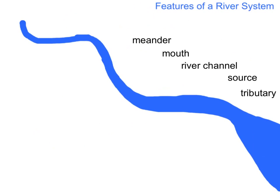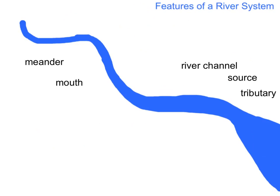So that's an introduction to some of the vocabulary we'll be using during our learning journey to learn more about rivers and river systems. The words we've learnt here are: meander, which is a bend in the river; and mouth, which is where the river flows out into a lake or into the sea.